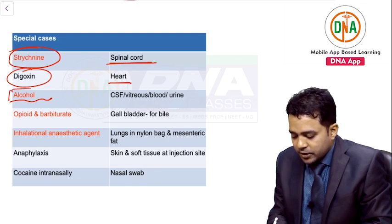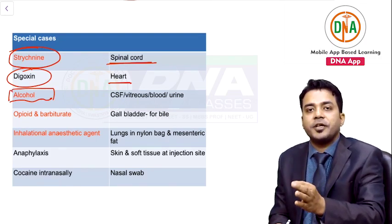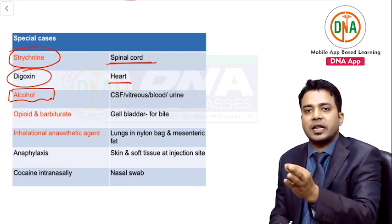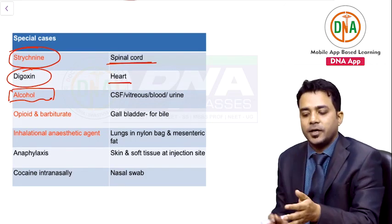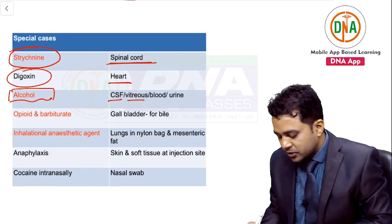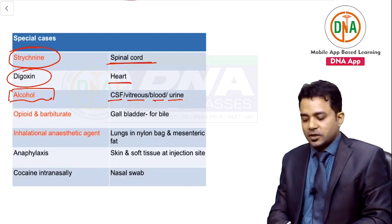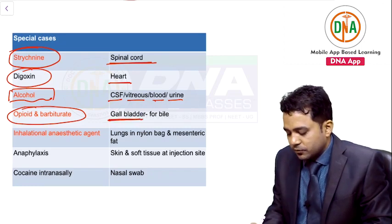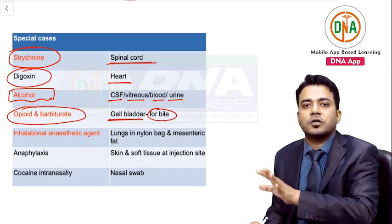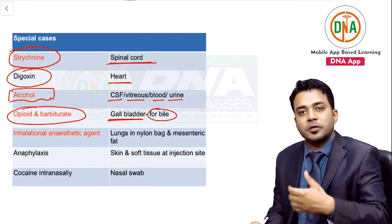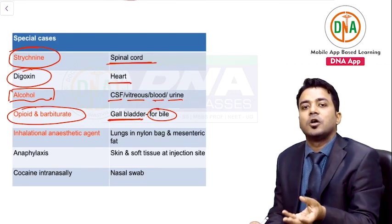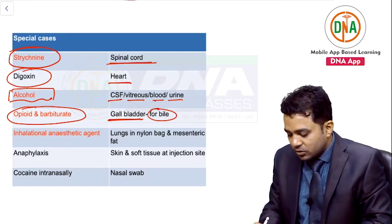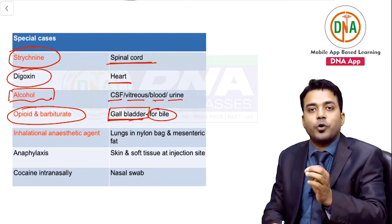In alcoholic deaths, alcohol is distributed in every body fluid — synovial fluid, vitreous humor, CSF, saliva, sweat, urine, blood — in certain ratios. So anything can be preserved for alcohol estimation. For opioid and barbiturate poisoning, the gallbladder is preserved because opioids and barbiturates are concentrated in bile.